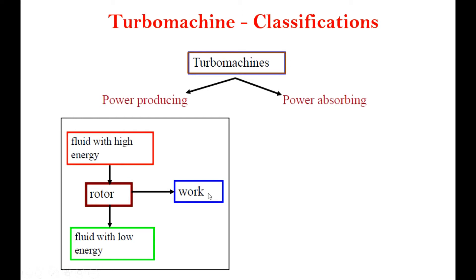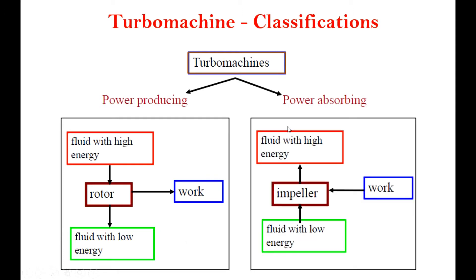The fluid coming out of the rotor consists of low energy. In the power-absorbing machine, we have fluid with low energy, and we have an impeller to which work input is given. The fluid coming out of the impeller consists of high energy. These are the basic classifications of Turbomachines.